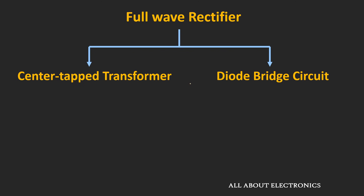This full wave rectifier circuit can be designed using two methods. The first is using the center-tap transformer, and the second method is using the diode bridge circuit. So first let's see how we can design the full wave rectifier circuit using the center-tap transformer.